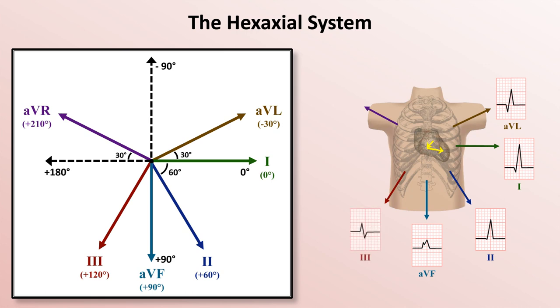In lead three, the first depolarization vector is in nearly the same direction as the lead, so the initial deflection on EKG is positive and large relative to the initial deflection in other leads.